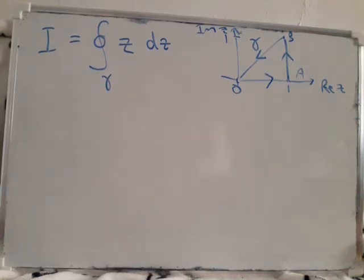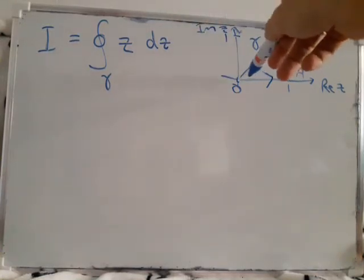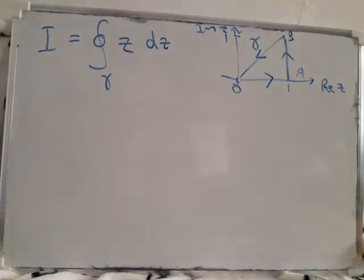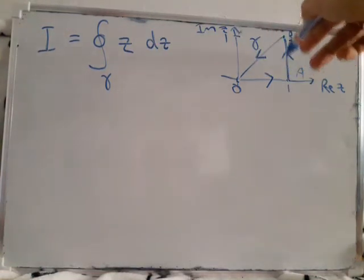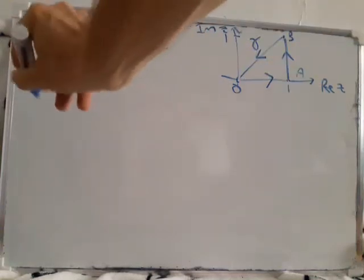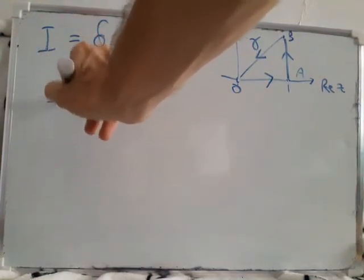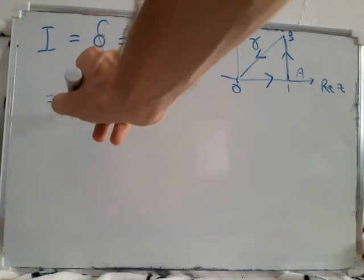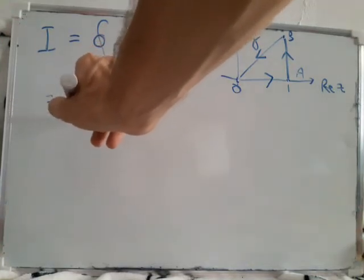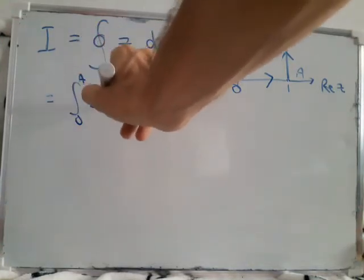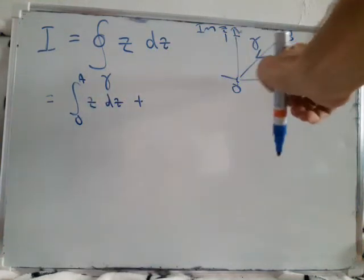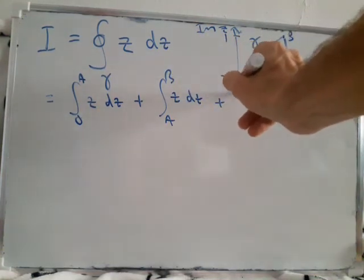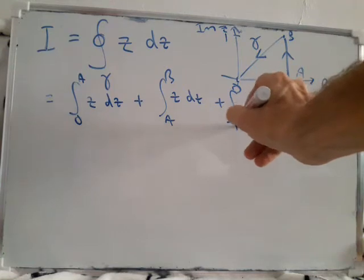There's a theorem we'll talk about very soon that explains why the answer has to be zero, but we're going to do this as an exercise to understand in more detail exactly what a contour integral, as this is called, does. When you see a contour integral or line integral like this, you're integrating the function z along various lines. We can split this up into three pieces: the integral of z from O to A, plus the integral from A to B, plus finally the integral from B to O.